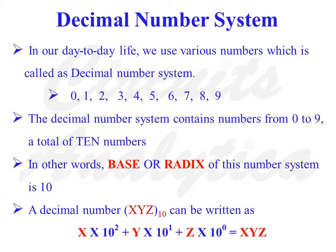Let us begin our discussion with the decimal number system. In our day-to-day life, we use various numbers, which is usually called the decimal number system, which basically consists of numbers from 0 to 9. The decimal number system contains numbers from 0 to 9, a total of 10 numbers. In other words, the base or radix of this number system is 10, as it consists of 10 numbers from 0 to 9.